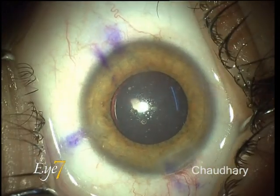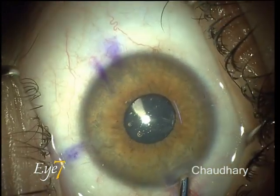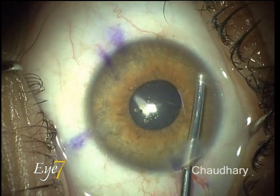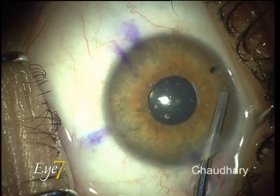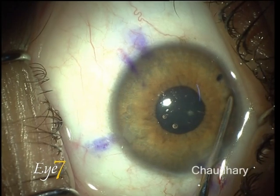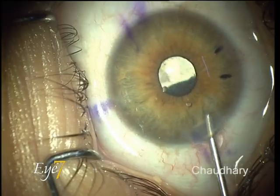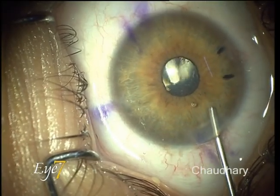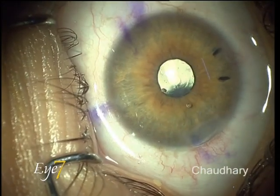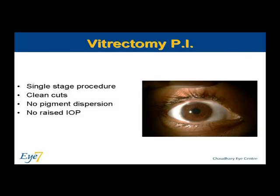We prefer vitrectomy PIs and two vitrectomy PIs are being made here. The viscoelastic is removed with simple irrigation. The use of a vitrectomy cutter for a peripheral iridectomy has several advantages — it is a single-stage procedure with clean cuts and minimal pigment dispersion, and consequently has greater patient comfort and acceptability.